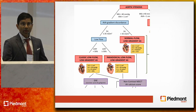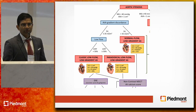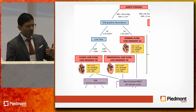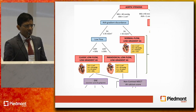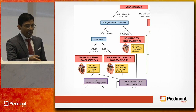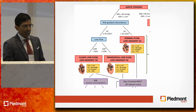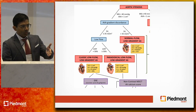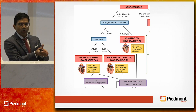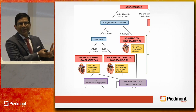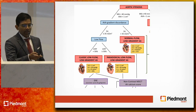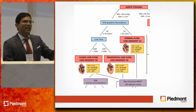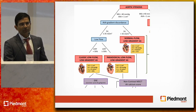If the valve area stays less than one but the gradient now becomes greater than 40, you can diagnose true severe aortic stenosis. Optionally, you can do a calcium score of the aortic valve. For patients with preserved ejection fraction, the guidelines direct you to a calcium score — so please don't order a dobutamine echo on somebody with a normal ejection fraction. The dobutamine echo is only for patients with a low ejection fraction, because the concept is their flow is low, we need to normalize it and then measure the aortic valve gradient.